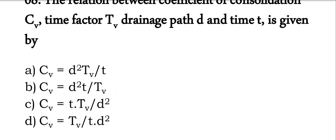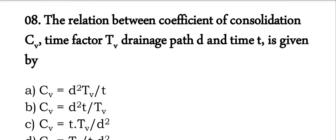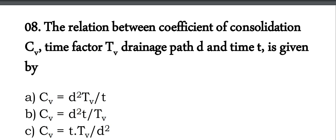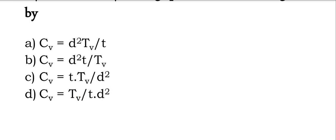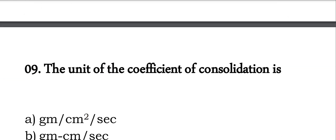The relation between the coefficient of consolidation Cv, time factor, and time: time factor is nothing but Cv times t divided by d square. So the correct option is option C: Tv equals Cv times t divided by d square.